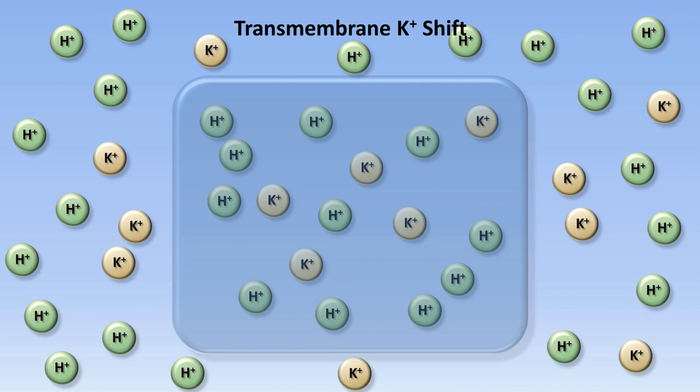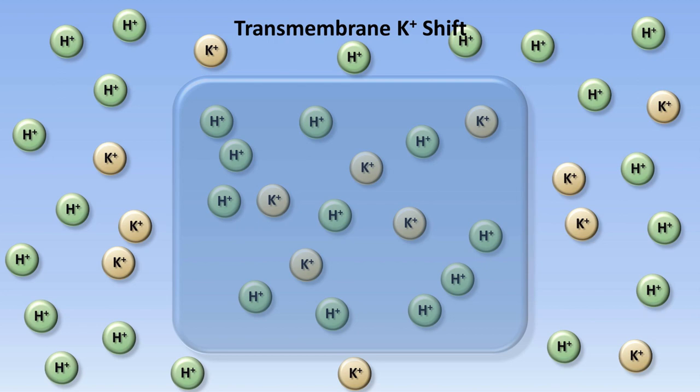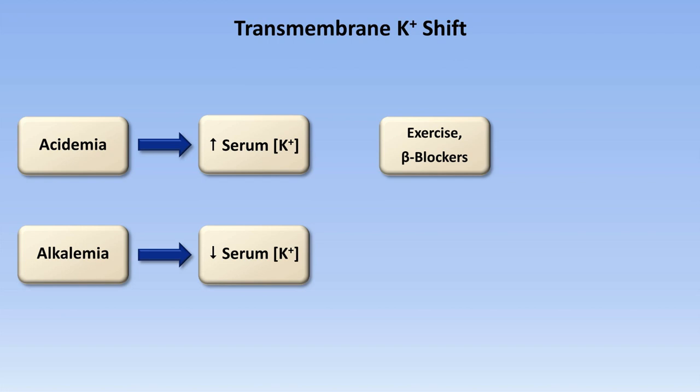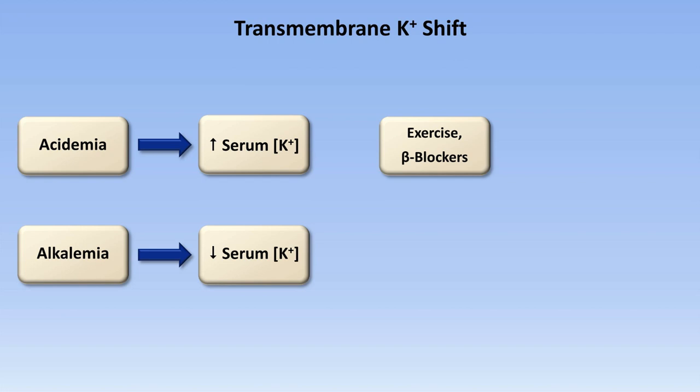So in summary, acidemia leads to modest hyperkalemia. By the converse of that mechanism, alkalemia can lead to a very modest hypokalemia. In addition to acid-base disturbances, a few other factors can lead to transmembrane shifts of potassium. So exercise and treatment with a beta blocker class of medications can lead to hyperkalemia. And insulin and activation of beta-2 receptors by circulating catecholamines like epinephrine can lead to hypokalemia.